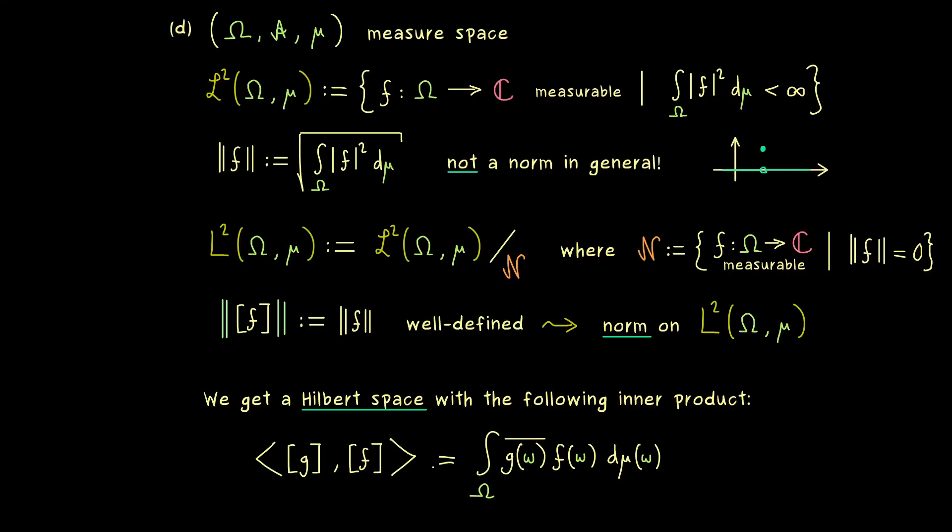This is the definition of the inner product we deal with in the capital L² space. And of course, you might already know the most important case here, namely the Lebesgue measure on the real number line. Then we just have a standard one dimensional integral here, and we get the L² space on R. However, now you have seen the general case and the general construction for a measure space. This is really helpful, because this description here already gives us a lot of examples for Hilbert spaces.